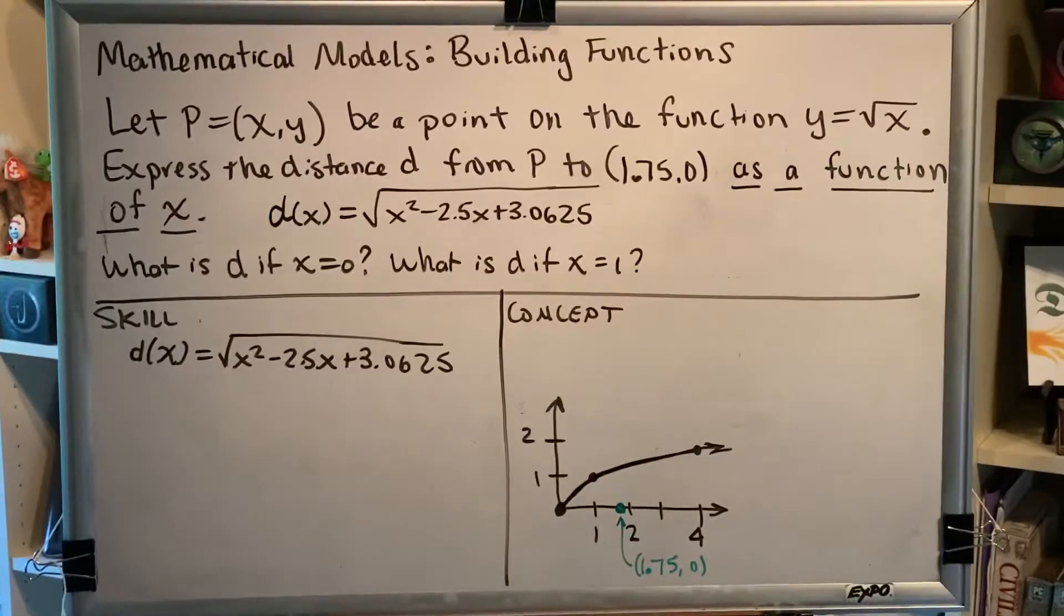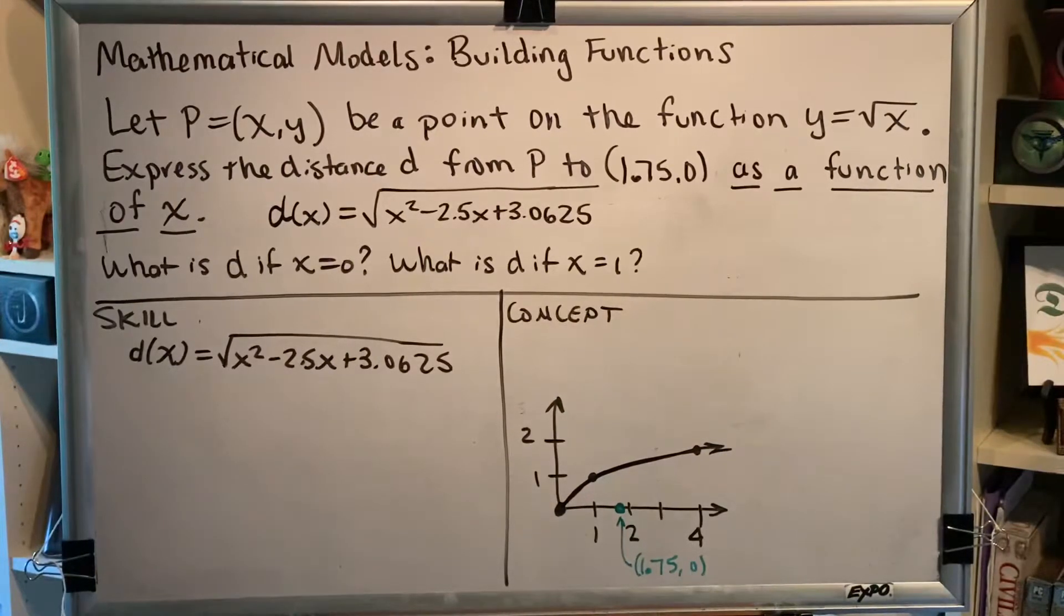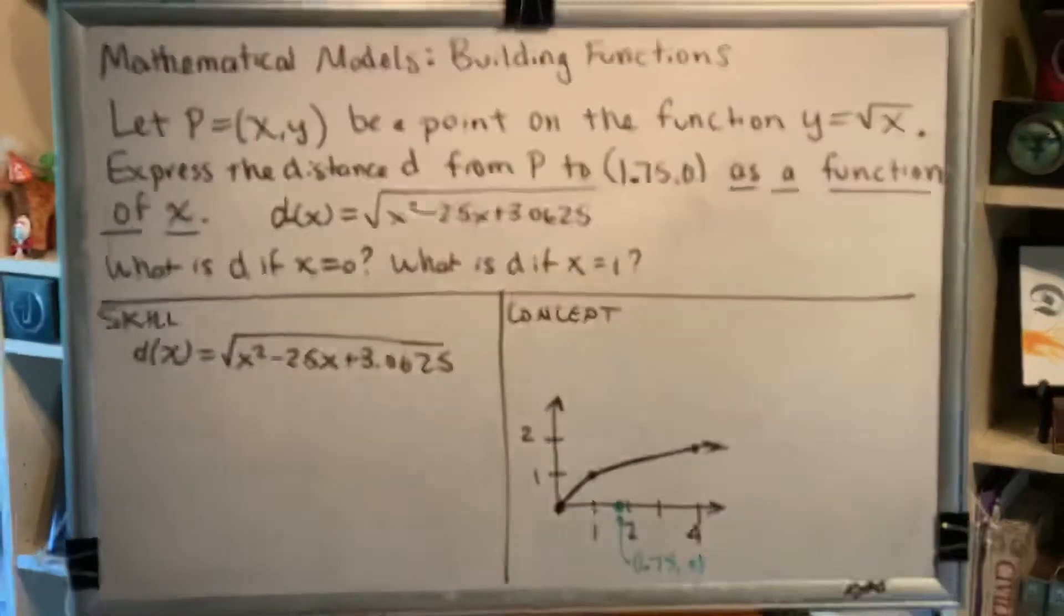The topic of this video is mathematical models building functions. This video is a continuation of the previous videos. Alright, so we're still working on this same problem. Let P equal the point (x, y) be a point on the function y equals the square root of x. Express the distance d from P to (1.75, 0) as a function of x.